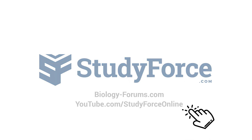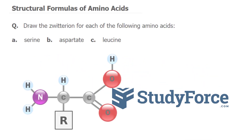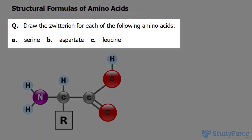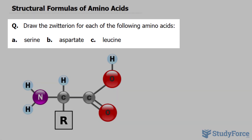In this lesson, we'll be discussing the structural formulas of amino acids. The question reads: draw the zwitterion for each of the following amino acids — serine, aspartate, and leucine.